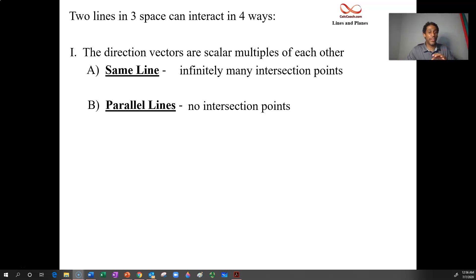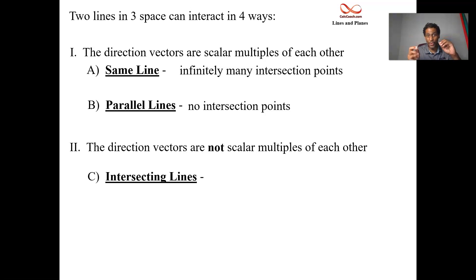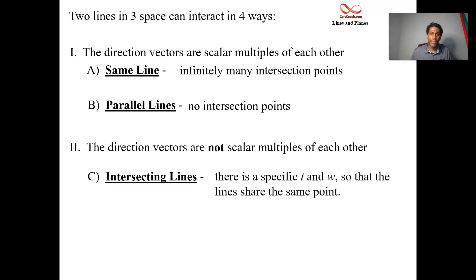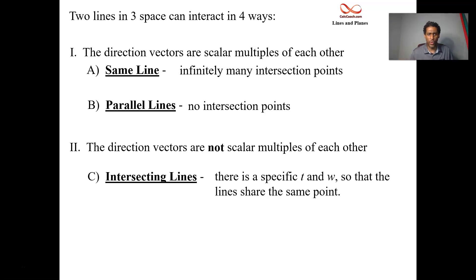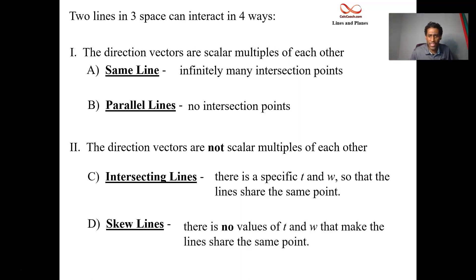If the direction vectors are not scalar multiples of each other, then you can have two other situations. The lines can be intersecting — there's a specific time T and a specific time W where the lines will collide and share the same point. The last option is skew lines, which might be new. These first three cases are familiar from 2D, but this fourth one might be new.